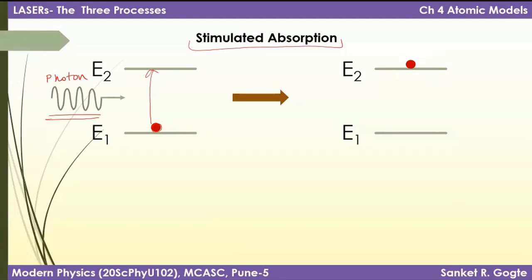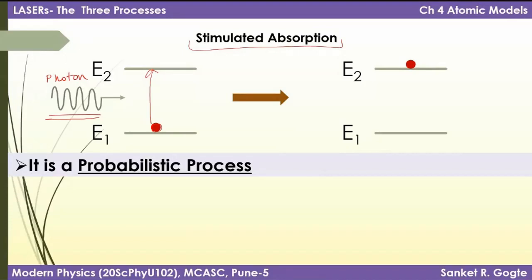This is a probabilistic process. Quantum mechanics, which governs all these systems, is inherently probabilistic — you always talk about probabilities. What this means is: even if a system is in energy state E1 and a photon interacts with it, it is not guaranteed that the photon is absorbed. All you can talk about is the probability that the photon will be absorbed.